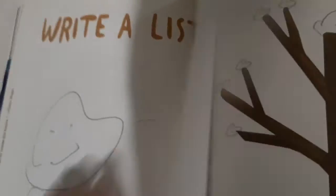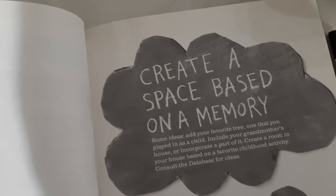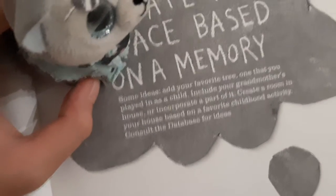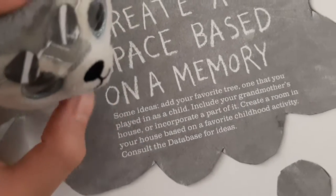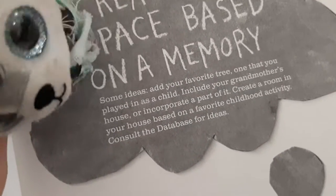So anyway, here's where we left off, I think. It's further than that. Golly, we sure wrote a lot. Come on, a little bit more. There we go. Create a space based on a memory. Some ideas: add your favourite tree — one that you played in as a child. Include your grandmother's house or incorporate part of it. Create a room in your house based on your childhood activity. It's a database for ideas.